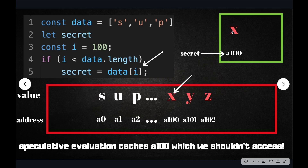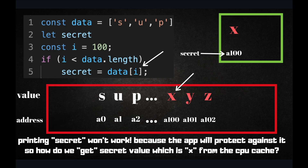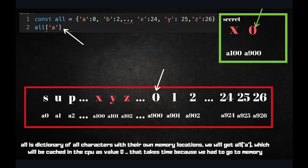Then the CPU's speculative evaluation says: oh, we were wrong — let me remove that. But the problem is the CPU doesn't actually remove it from cache. You might say: just print the value secret in JavaScript. No, that's not how it works, because the CPU and the application will protect us from accessing data we're not supposed to access — they won't just give you the value straight out. So we need to trick the CPU into revealing the value without it directly giving us the value.